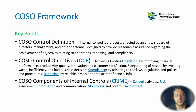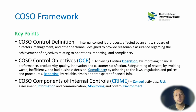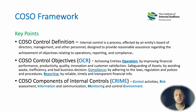The COSO control objectives can be remembered through the acronym ORC — whichever order you use. O refers to operations, R to reporting, and C to compliance. Under operations, we have to ensure controls that achieve financial performance objectives, drive productivity, quality, innovation, and customer satisfaction.